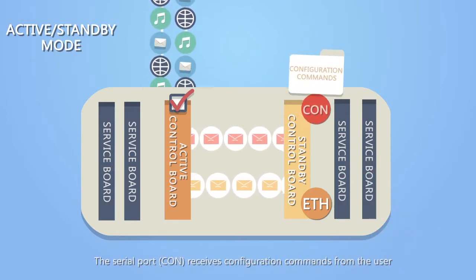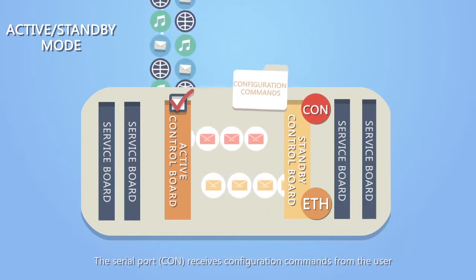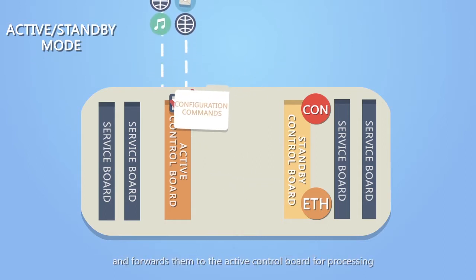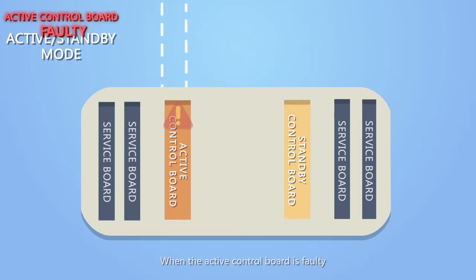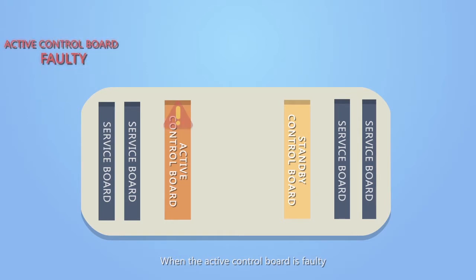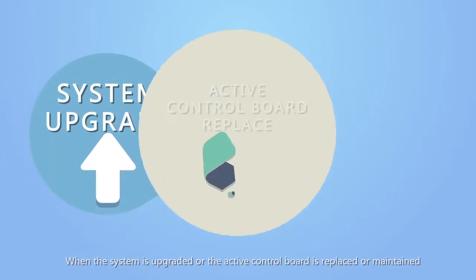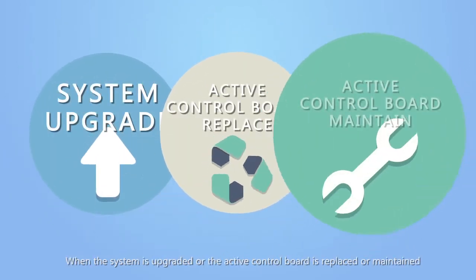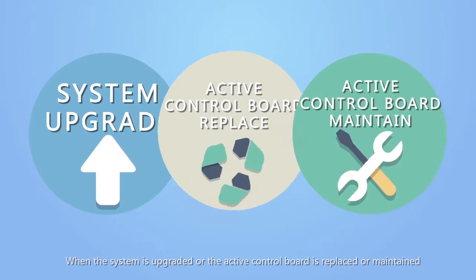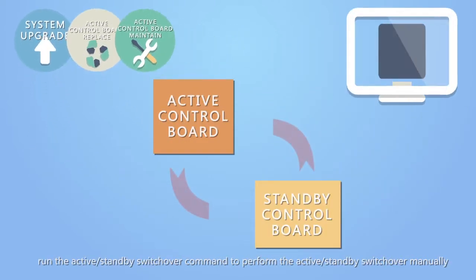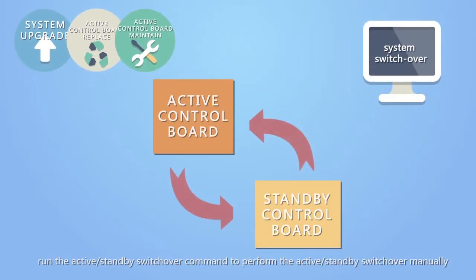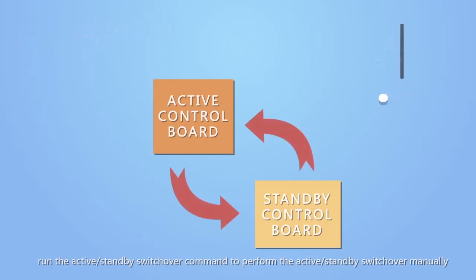The serial port, CON, receives configuration commands from the user and forwards them to the active control board for processing. When the active control board is faulty, the system automatically performs the active standby switchover. When the system is upgraded or the active control board is replaced or maintained, run the active standby switchover command to perform the active standby switchover manually.